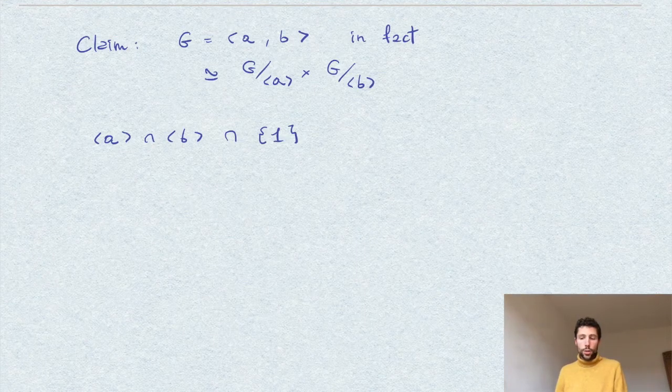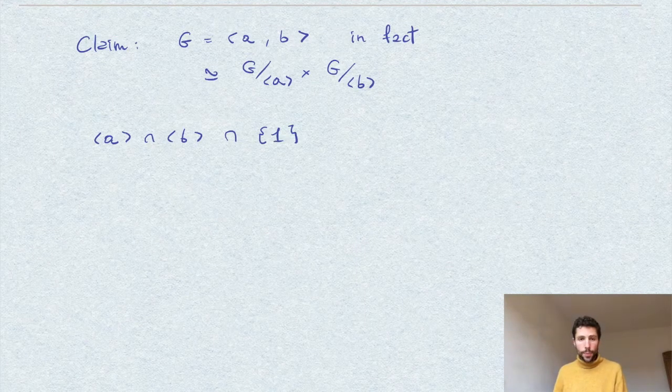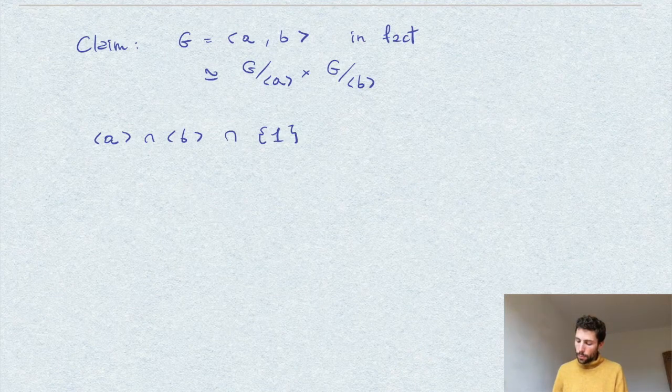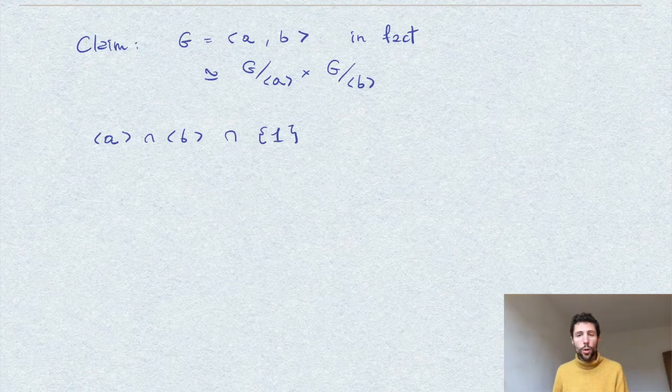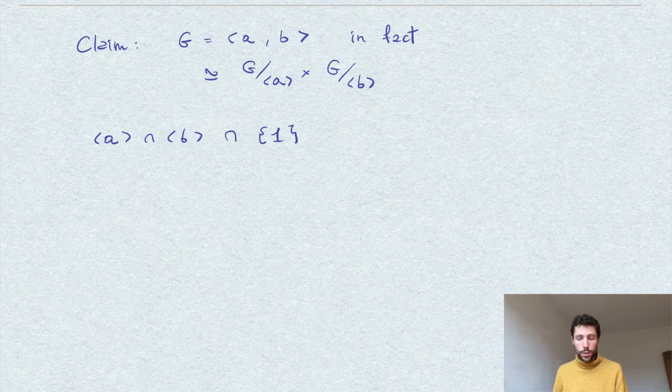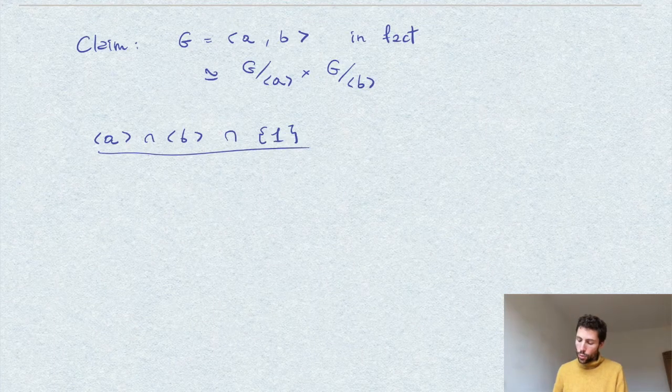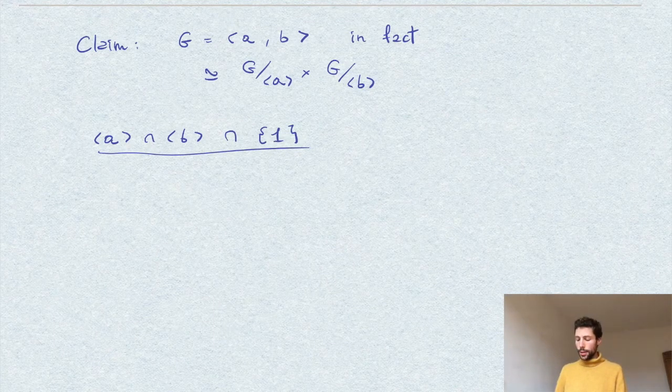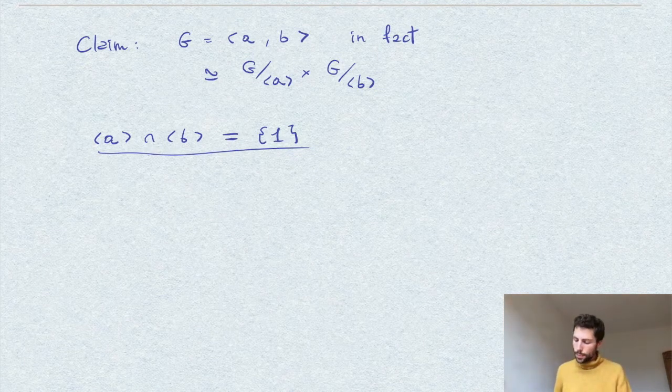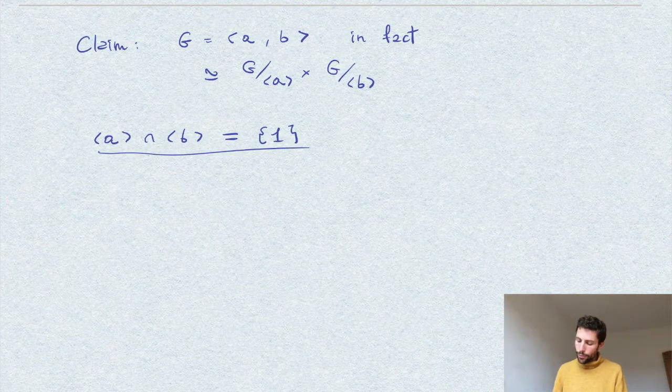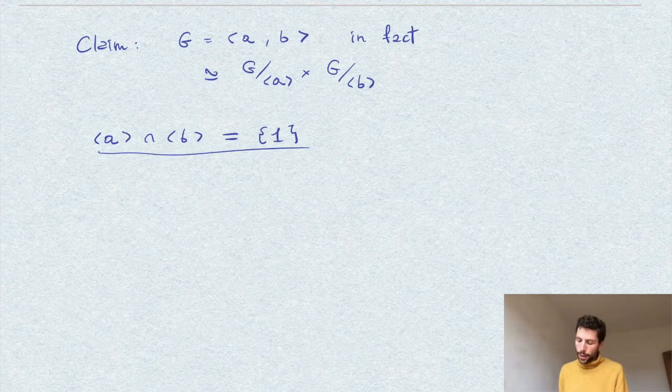don't intersect only trivially. So by this, we can apply what we have seen in the video called group morphisms and normal subgroups. And there, we see that whenever we have two normal subgroups which intersect, here I made a small mistake, I wanted to write, this is equal to 1. So whenever we have two normal subgroups which intersect at the identity,